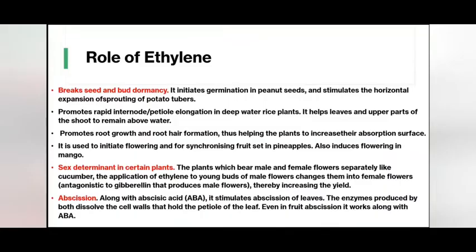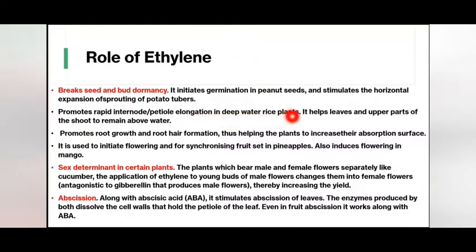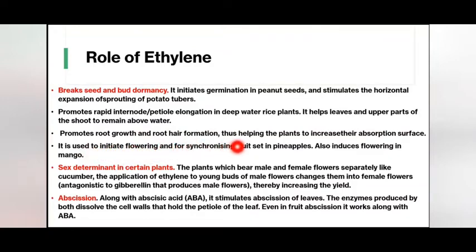Role of ethylene: it breaks seed and bud dormancy, initiates germination in peanut seeds, and stimulates the horizontal sprouting of potato tubers. It promotes rapid internode and petiole elongation in deep-water rice plants, helping leaves and upper parts of the shoot to remain above water. It also promotes root growth and root hair formation, thus helping plants to increase their absorption surface.